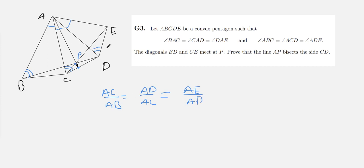And both of these ratios are also equal to AE over AD. Now, what I'd like to show is that triangles ACE and ABD are similar. So we want to show that ACE is similar to triangle ABD.